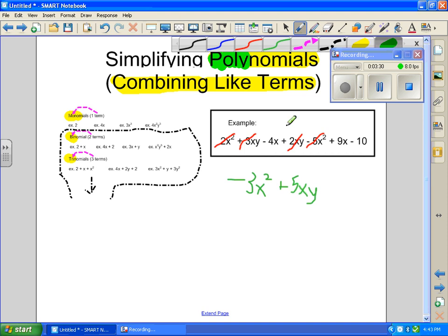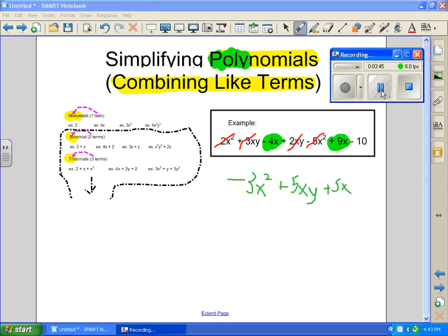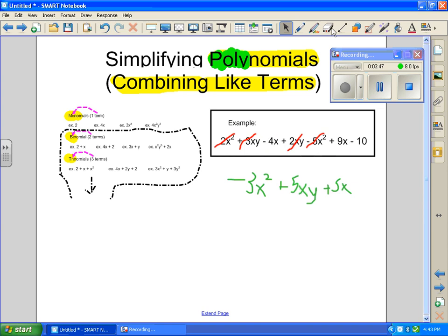Now we go to the next one. We have negative 4x. So we've got to look for more x terms. Oh, here we go. We've got a positive 9x. 9x and a negative 4x. They work against. So that gives you positive 5x. Now we cross them off our list. So we'll put some red lines through them. Bam, bam.